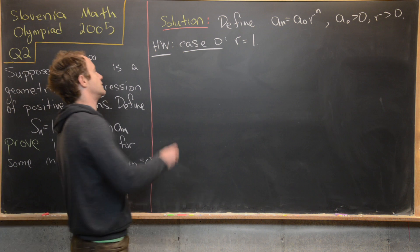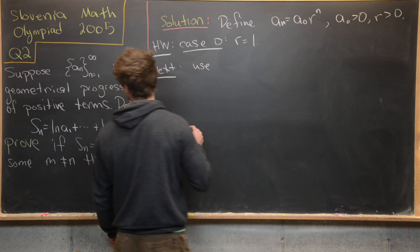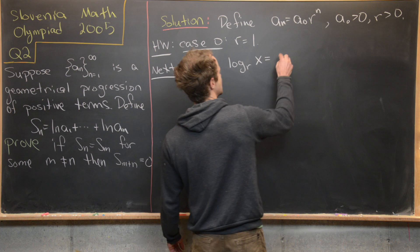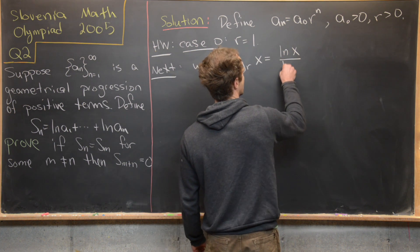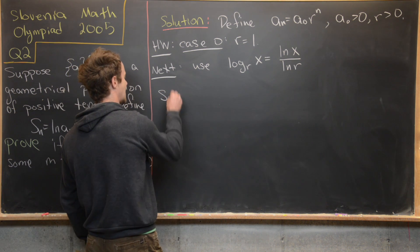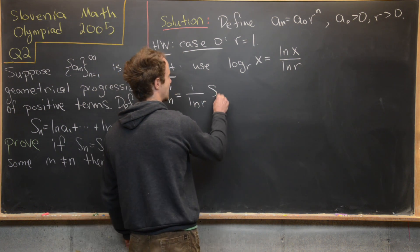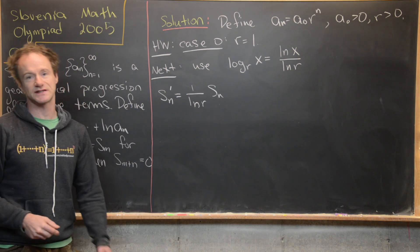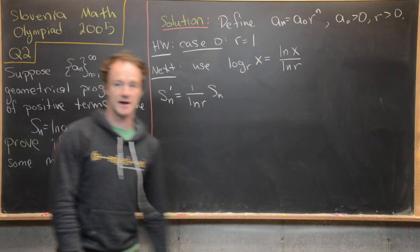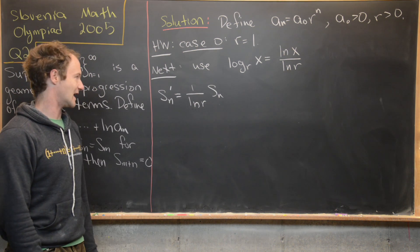Inspired by the change of base formula — log base r of x equals the natural log of x divided by the natural log of r — let's set s_n' equal to (1 / ln r) times s_n. This is just a constant multiple of s_n, so anything we prove about s_n' will follow for s_n. Note we exclude r equals 1 since that would put a zero in the denominator.